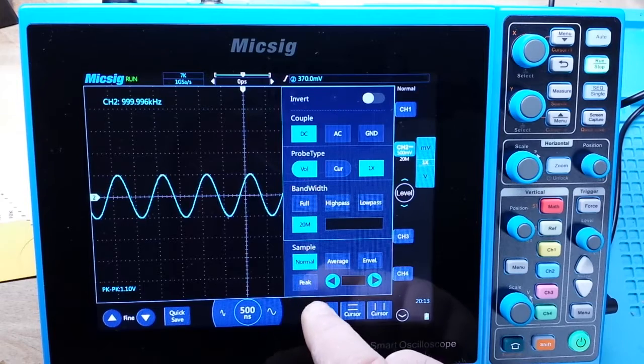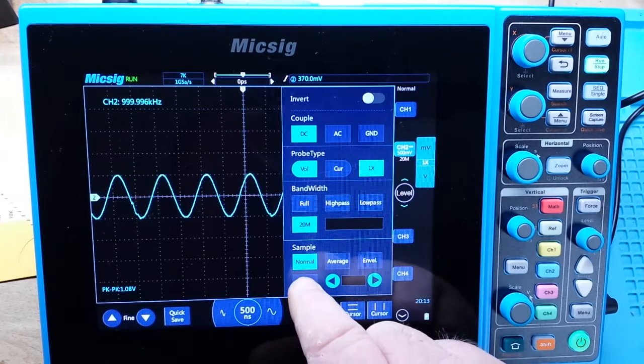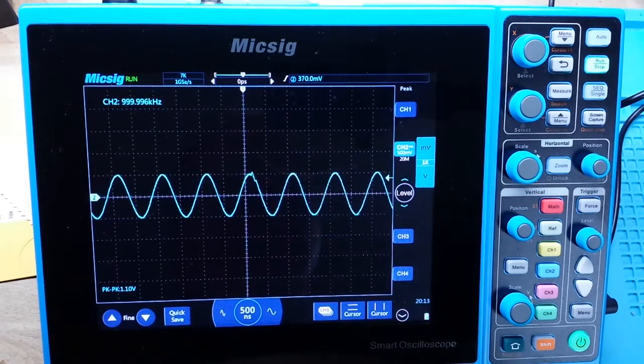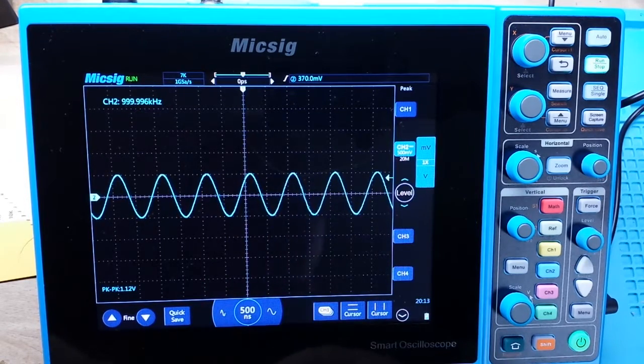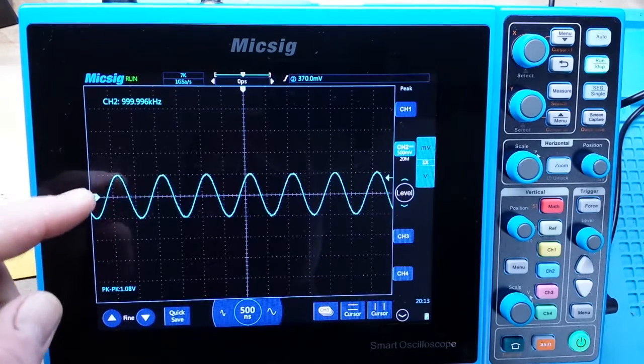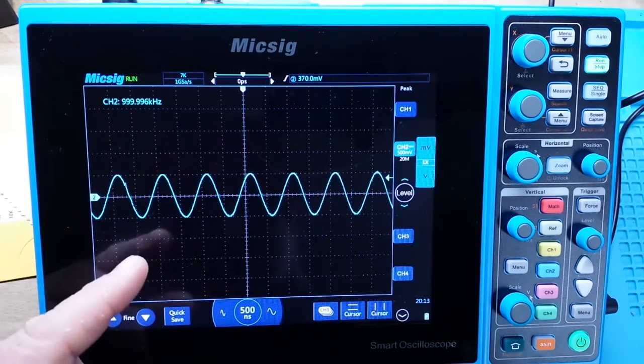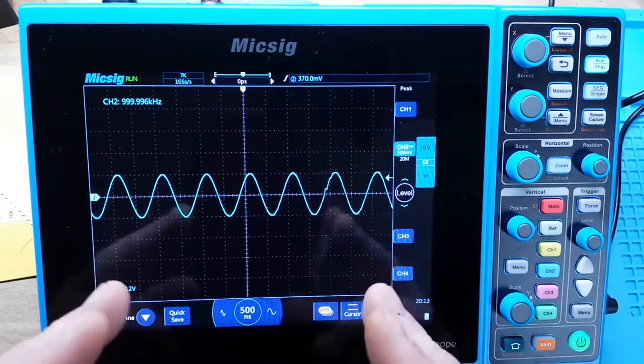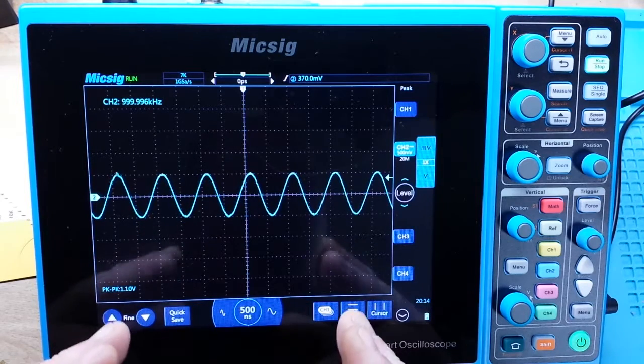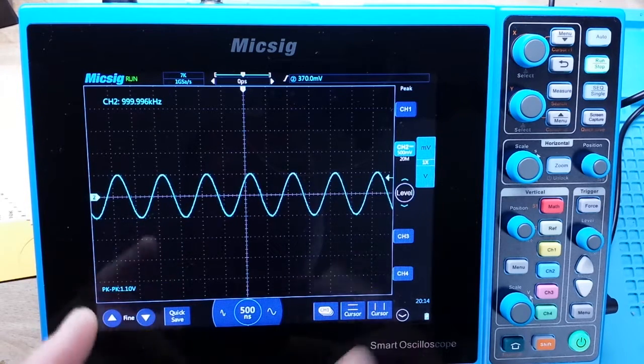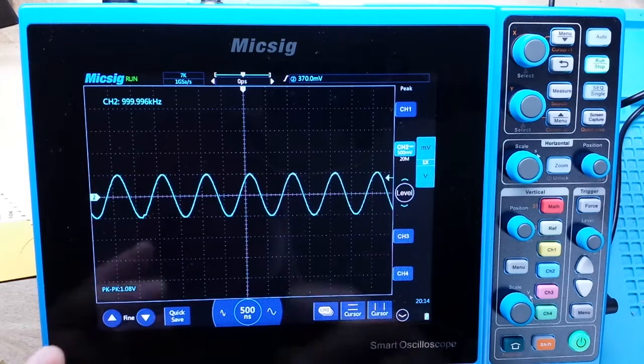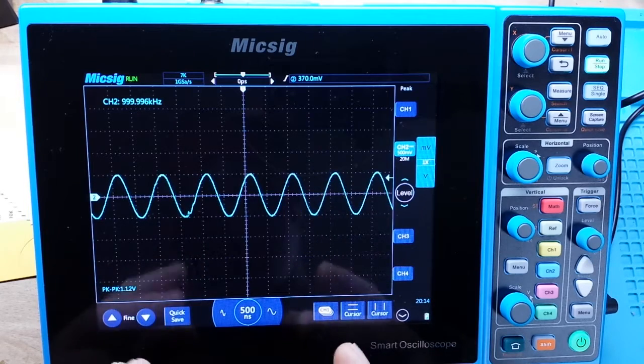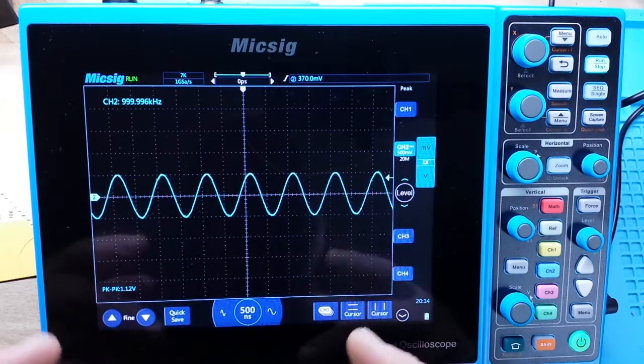Our next mode we have is peak mode. You see it kind of looks pretty much the same here. What peak does is it uses the minimum and maximum for every individual point of a waveform and then basically averages them together, so this is a form of averaging. Where this peak mode works out really good is in pulses, especially pulses that are spread far apart, and the reason for that is the ADC is in its fastest acquisition mode here.